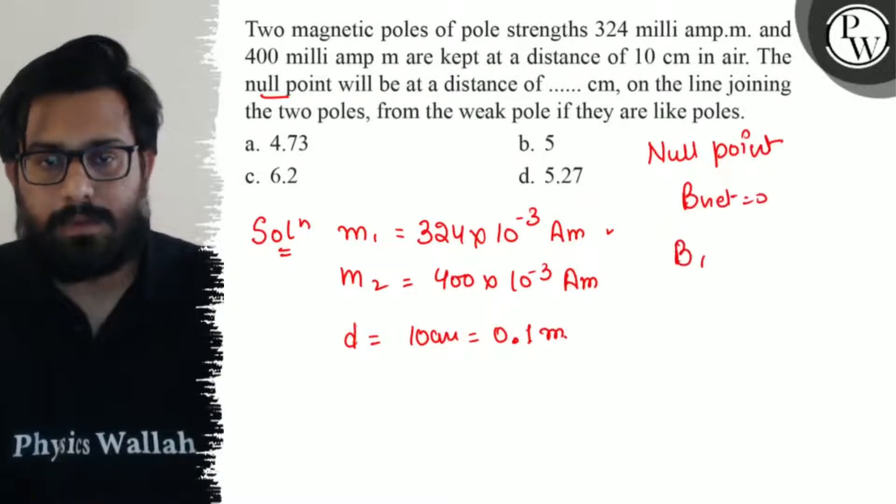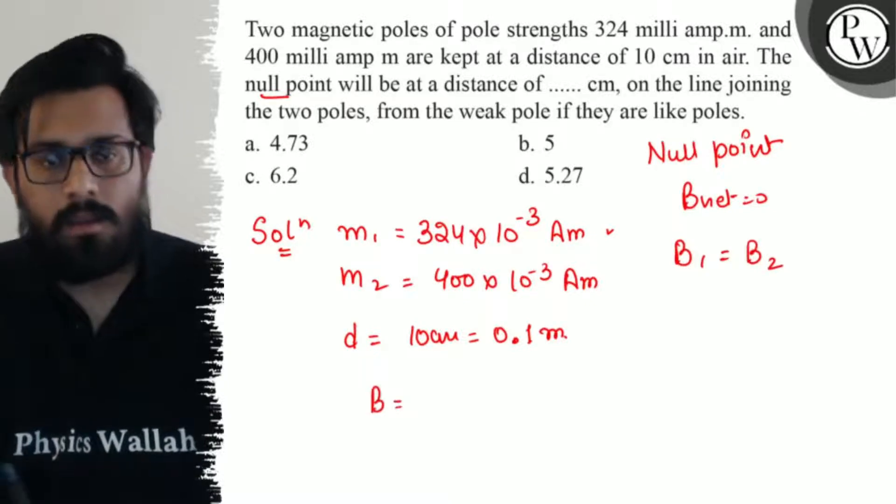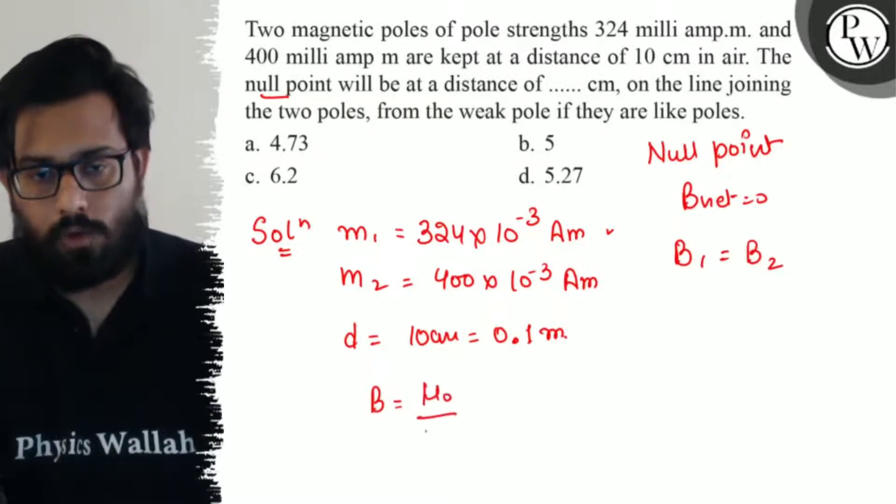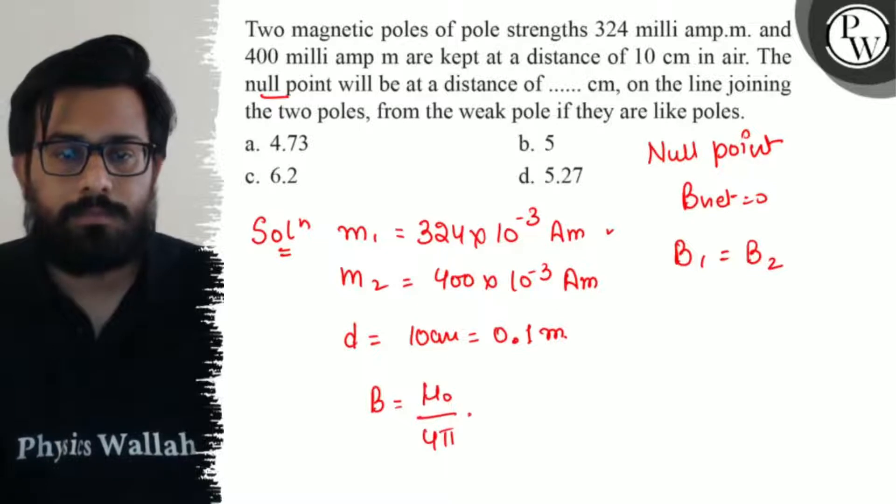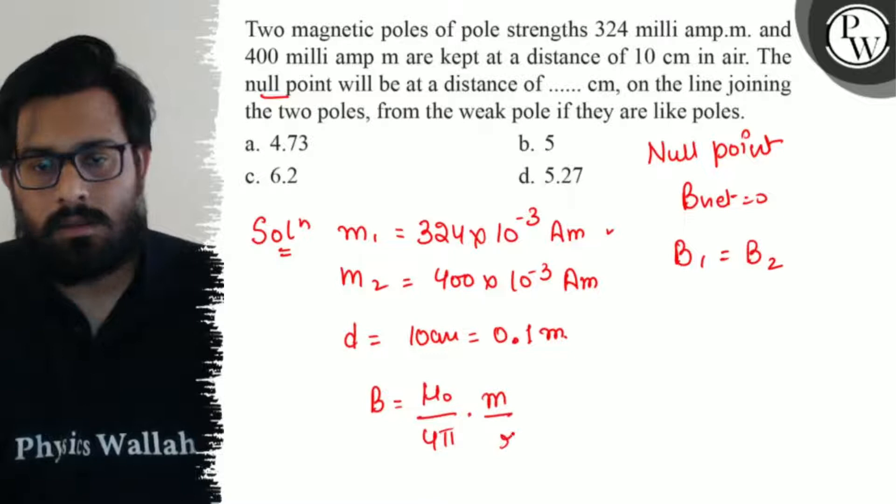At the null point you can simply say B1 is equals to B2. B is mu naught upon 4 pi into m by r ka square.